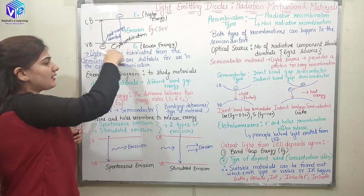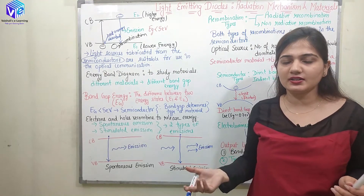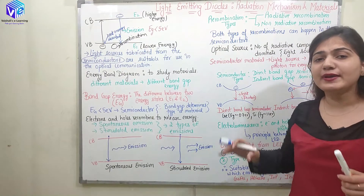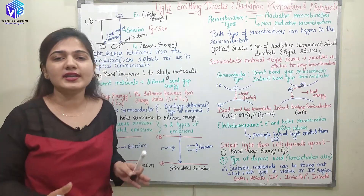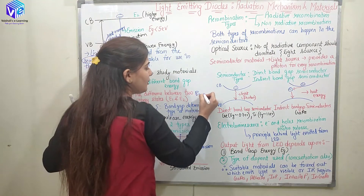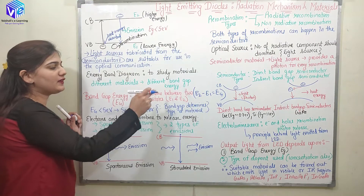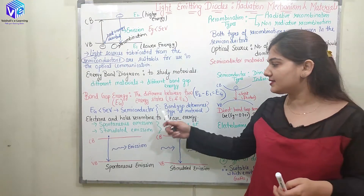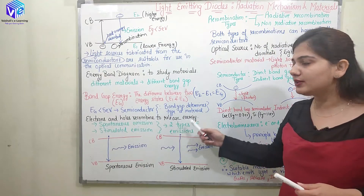The energy band diagram is used to study and denote the different properties of different materials, because different materials have different band gap energies. Band gap energy is the energy between the two states — the higher energy state and the lower energy state: E2 minus E1. So band gap energy Eg equals E2 minus E1. When Eg is lesser than 5 electron volts, the material is classified as a semiconductor. The band gap determines the type of material.